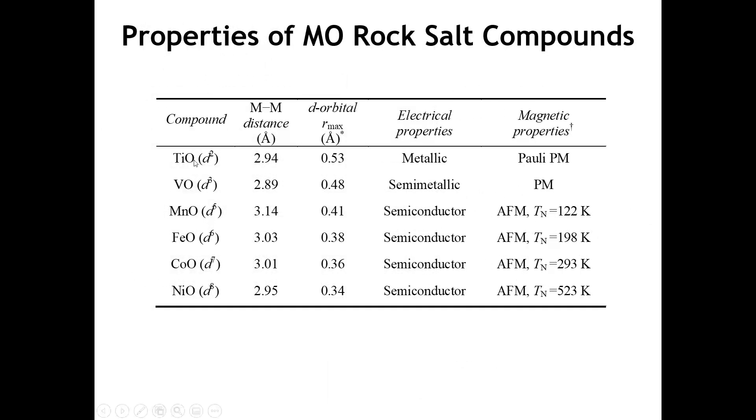Starting with titanium oxide, TiO, that has a D2 configuration. Here's the titanium-titanium distance and the maximum in the radial distribution function as a proxy for how large the D orbitals are. Titanium oxide is actually metallic. Vanadium oxide, where vanadium 2-plus has a D3 electron count, shows semi-metallic behavior, at the borderline between a metal and a semiconductor. MnO, which has a D5 count, shows the manganese ions are now farther away. The behavior now is clearly that of a semiconductor.